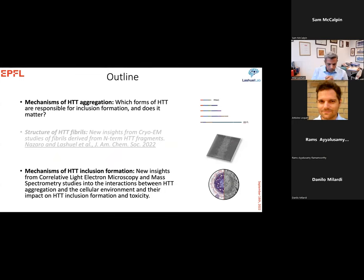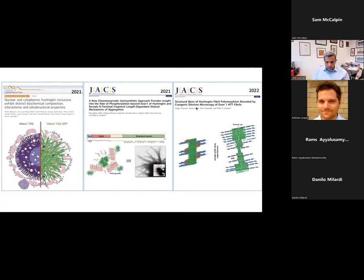In today's talk, I would like to discuss two main things: first, our recent studies trying to understand which forms of Huntington are actually responsible for inclusion formation — is there a single form, multiple forms, and what are the implications? Second, I will highlight new insights from correlative light electron microscopy and proteomic studies aimed at dissecting the mechanism of Huntington inclusion formation in cells. I had initially intended to talk about our recent work on cryo-EM structure of Huntington fibrils, but time is limited — please see our recent paper published in JAX.